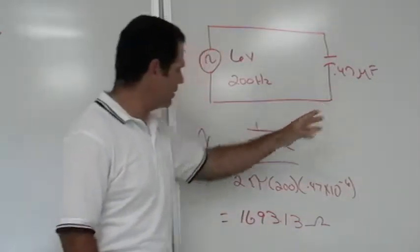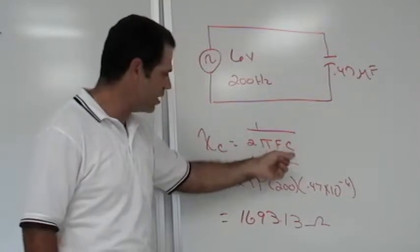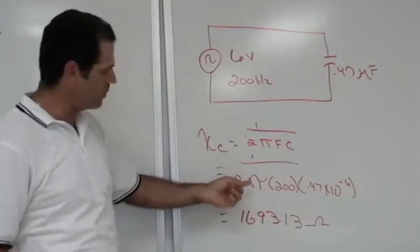To convert the microfarads into capacitor reactance, we use the formula 1 over 2 pi fc. Plug in the values. 2 pi is a constant that stays the same.